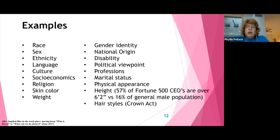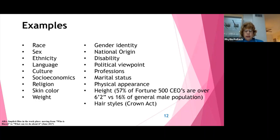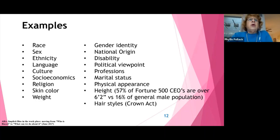In California, it amends the Fair Employment and Housing Act and the Education Code to say that it is discriminatory to take action based on hair texture and styles. It defines race to include protective hairstyles such as braids, locks, and twists. This is the most recent law on the books.